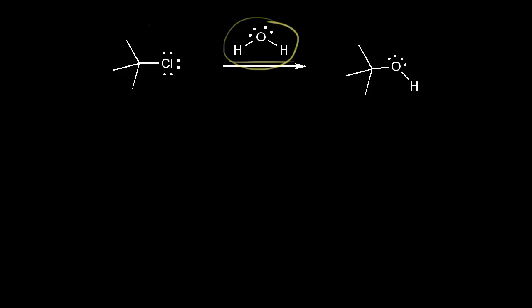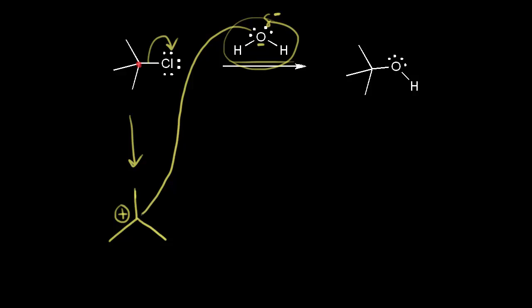The first step is still loss of a leaving group: these electrons come off onto chlorine to form the chloride anion, and the carbon in red gets a plus one formal charge. We draw our carbocation to show the planar geometry around that central carbon. In the next step, our nucleophile attacks our electrophile — the oxygen of water has a partial negative charge since it's more electronegative than hydrogen, and a lone pair on the oxygen forms a bond with the carbocation carbon.